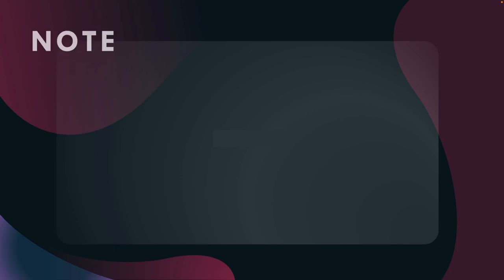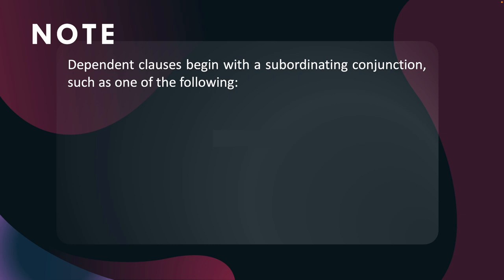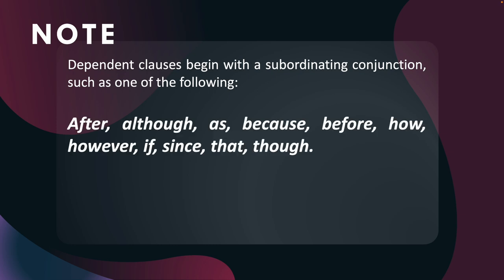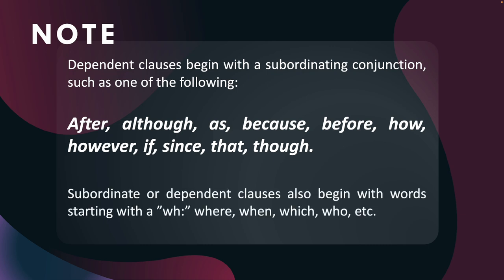Now, dependent clauses begin with a subordinating conjunction, such as: after, although, as, because, before, how, however, if, since, that, though. Subordinate or dependent clauses also begin with WH-words, like where, when, which, who, etc. So don't forget that — it's very, very important.